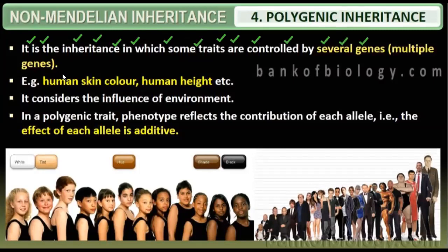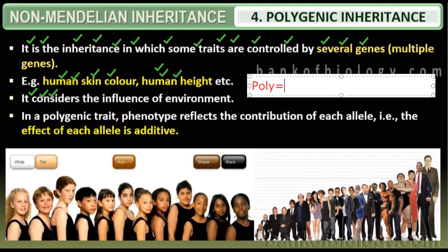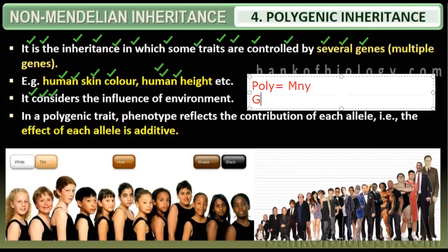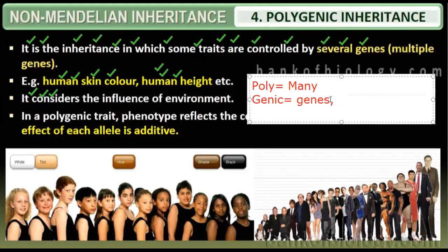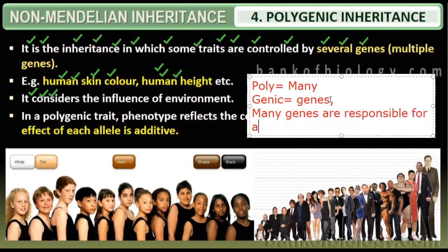Examples of polygenic inheritance are Human Skin Color and Human Height. It also considers the influence of the environment. Polygenic means 'many genes' — many genes are responsible for a single character.